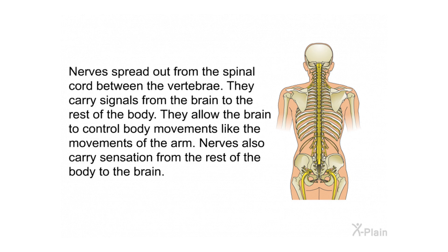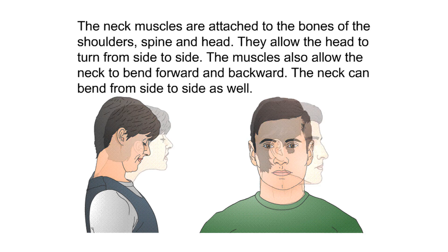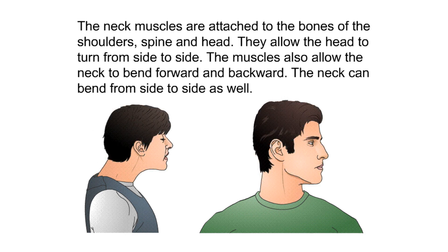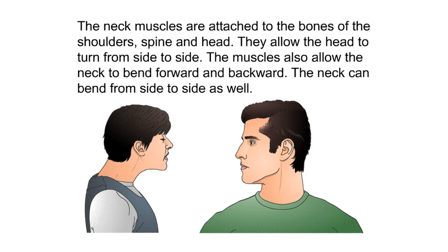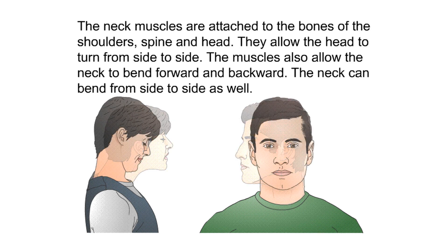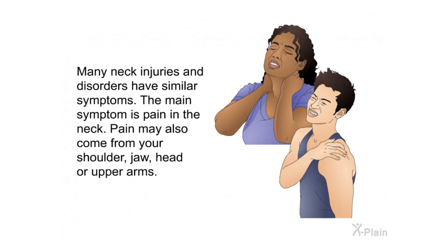Joints link the vertebrae and allow them to move smoothly; these are known as facet joints. Nerves spread out from the spinal cord between the vertebrae, carrying signals from the brain to the rest of the body and allowing control of body movements. Nerves also carry sensation from the body to the brain. The neck muscles are attached to the bones of the shoulders, spine, and head, allowing the head to turn side to side and the neck to bend forward, backward, and side to side.